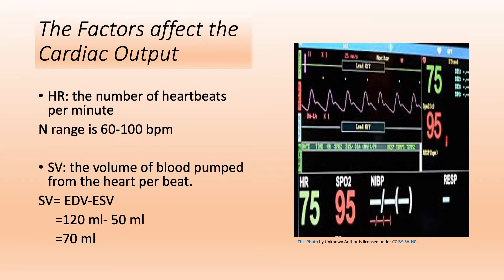Now, what are the factors that affect cardiac output? Let's look at the formula: cardiac output equals heart rate multiplied by stroke volume. First, let's discuss heart rate. Heart rate is the number of heartbeats per minute. The normal range is 60 to 100 beats per minute (bpm), but the average normal value for a 70-kilogram male is 72 beats per minute.